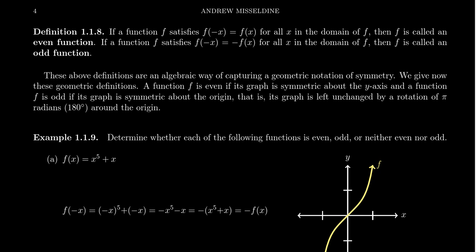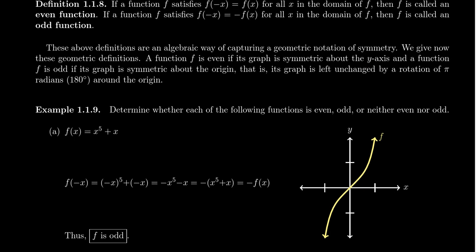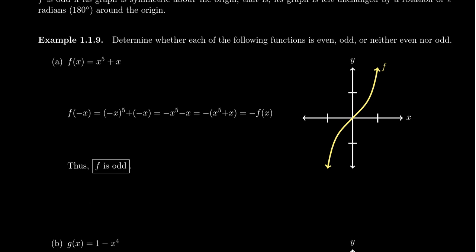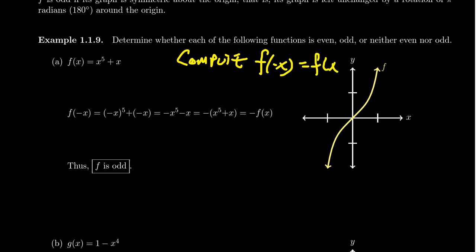Even functions are symmetric with respect to the y-axis — reflecting across the y-axis doesn't change the graph. Let's look at some examples to solidify this. Consider these functions and determine if they're even, odd, or neither — because a function doesn't have to be even or odd. Take f of x equals x to the fifth plus x. To algebraically test whether something is even or odd, we compute f of negative x. If even, f of negative x should equal f of x; if odd, it should equal negative f of x; otherwise, it's neither.